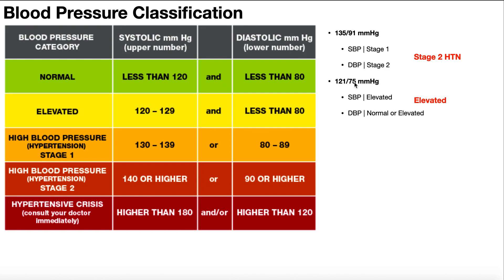The next blood pressure is 121 over 75. The systolic 121 is clearly in the elevated category. The diastolic 75 is less than 80, so it could be normal or elevated. For normal and elevated, both conditions must be satisfied. This can't be normal because the systolic is not less than 120. It's elevated because the systolic is between 120 and 129 and the diastolic is less than 80 — both conditions are met.